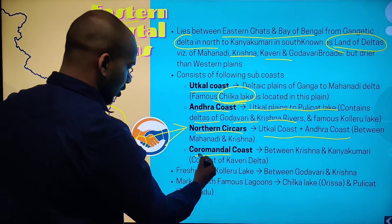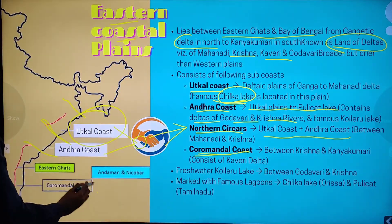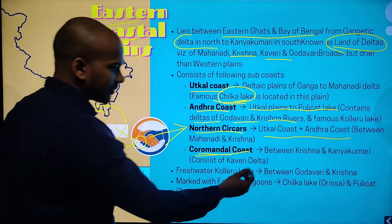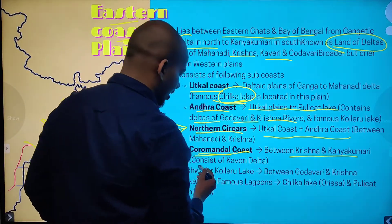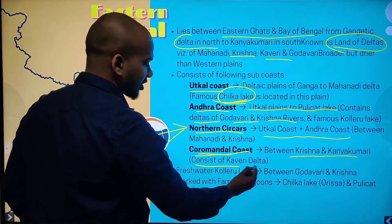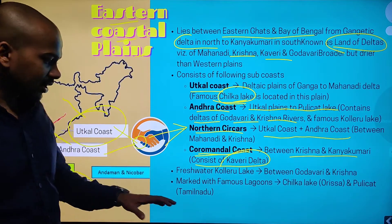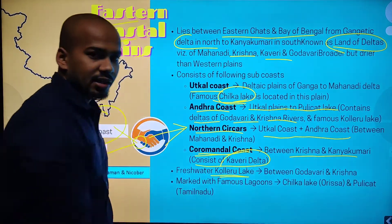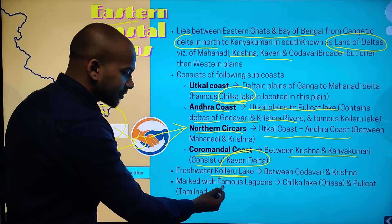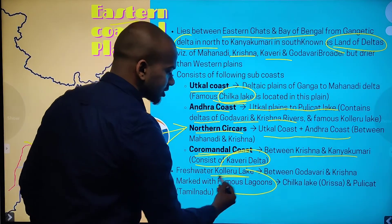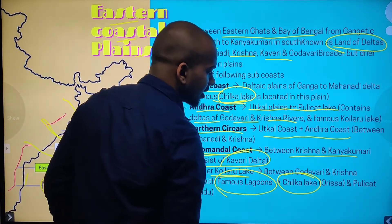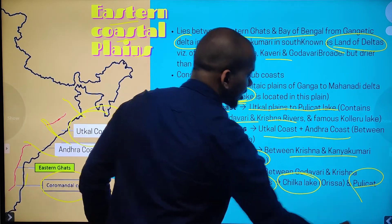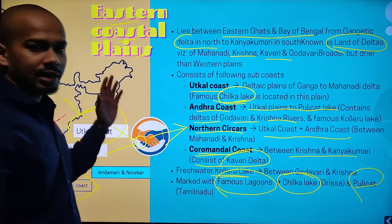Then there is the Coromandel coast, the southern part, which is between Krishna and Kanyakumari. It consists of the Kaveri delta. The freshwater Kolleru lake is located between Godavari and Krishna. The coast is marked with famous lagoons — the Chilika lake is located here, and Pulikat lake in Tamil Nadu is also located in this area.